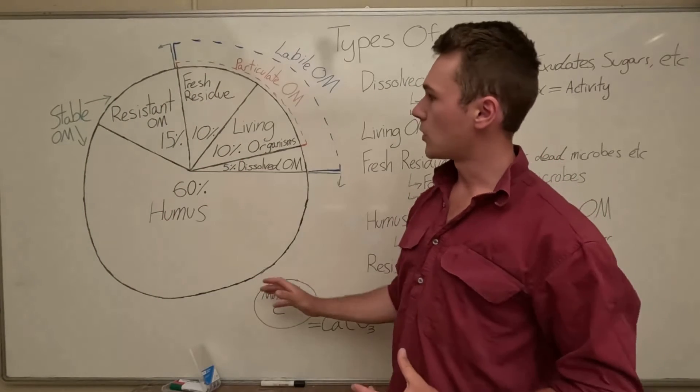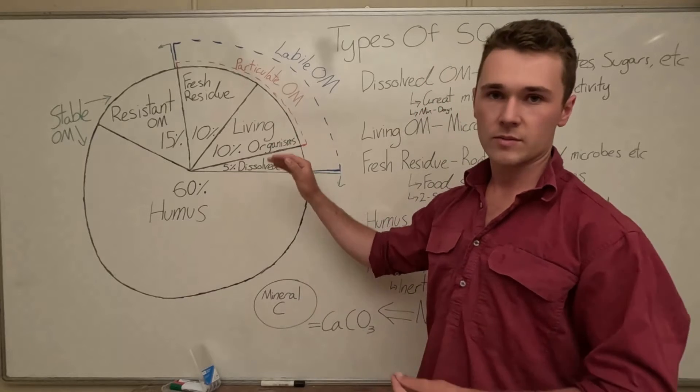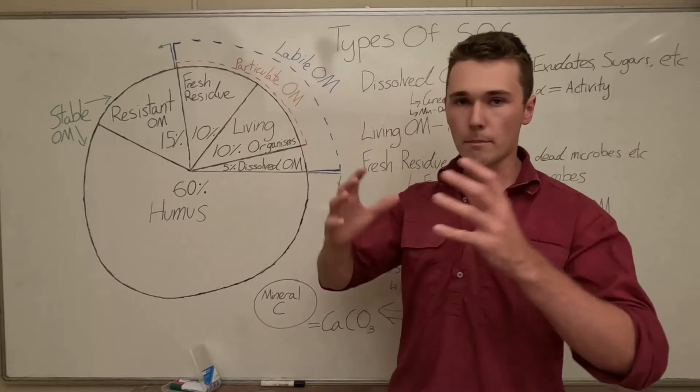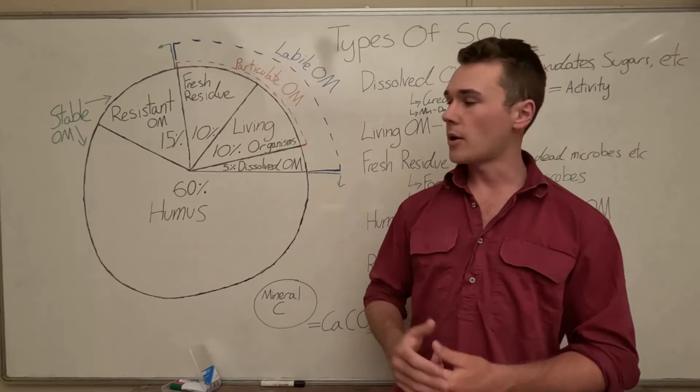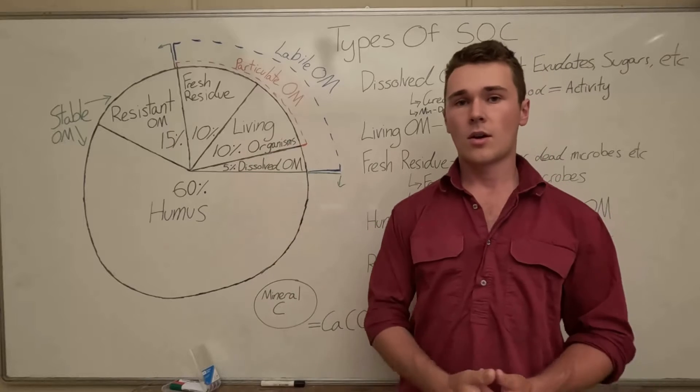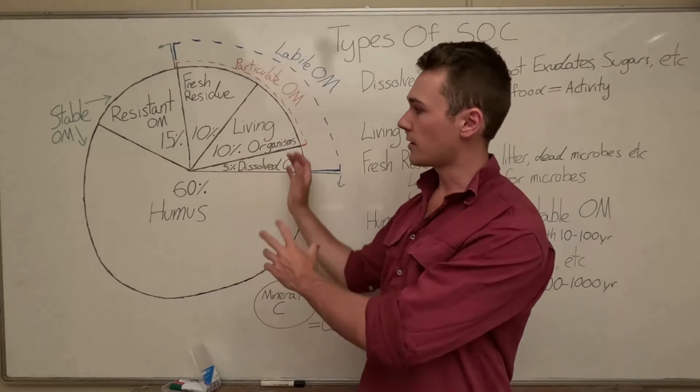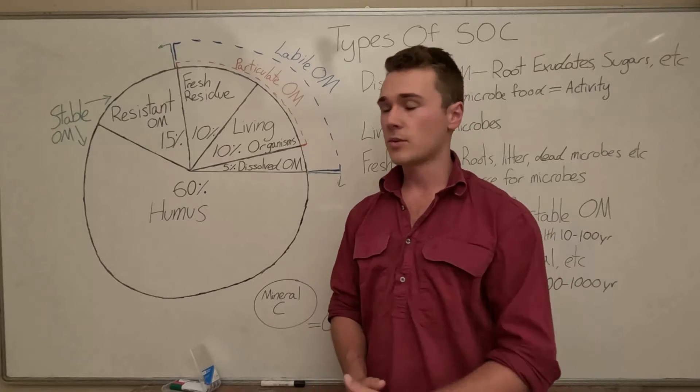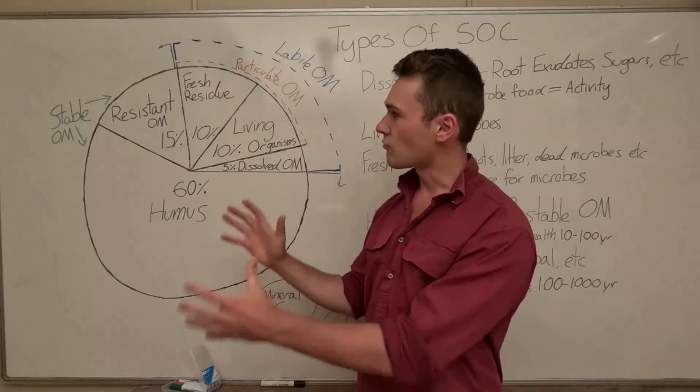So next in our pool of soil organic carbon is our living organisms. So this is things like bacteria, fungi, protozoa, nematodes or microbes make up this component. Now out of all that soil organic carbon it makes up about 10 percent of our soil organic carbon and remember too these are just rough figures that might vary in different soils and different management types.